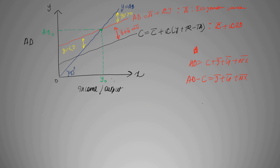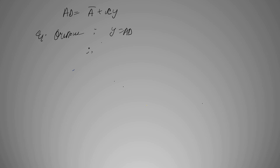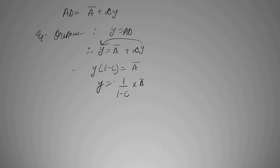Now we can start with another topic: the formula for equilibrium output. We just realized that AD equals a plus cy, and output is in equilibrium when y equals AD. Therefore for output to be in equilibrium, y equals a plus cy. Taking y to the left-hand side, y times (1 minus c) equals a, so y equals 1 over (1 minus c) times a. This is the equation of our equilibrium output.